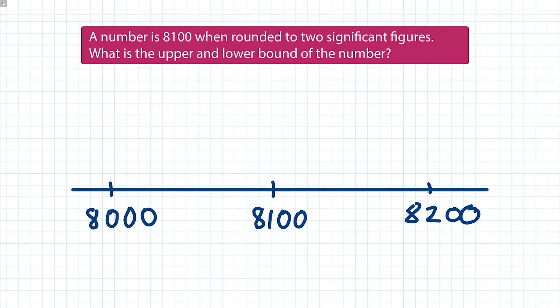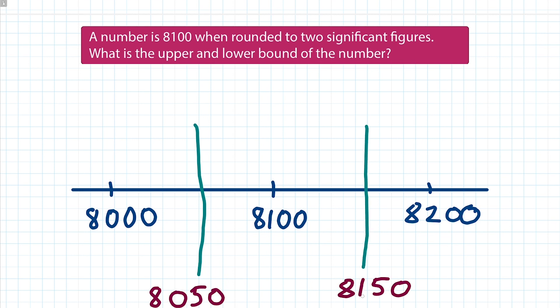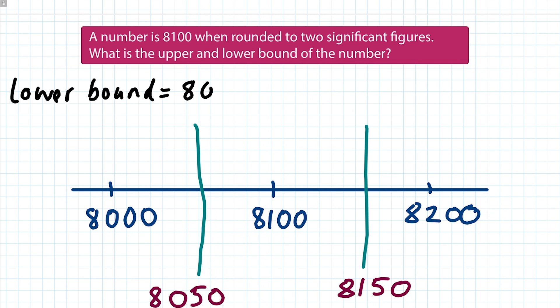The lower boundary is exactly halfway between 8,000 and 8,100, and the upper boundary is exactly halfway between 8,100 and 8,200. 8,050 is the point at which you would start rounding to 8,100 — below that you'd round down to 8,000. And 8,150 is the boundary where you go from rounding to 8,100 up to 8,200. So the lower bound is 8,050 and the upper bound is 8,150.